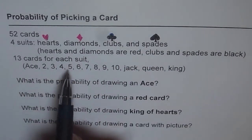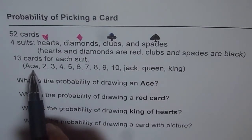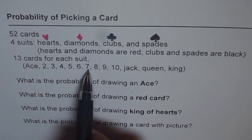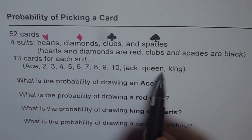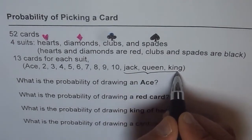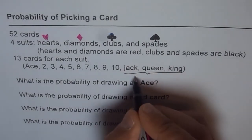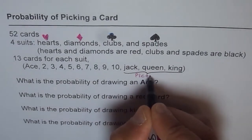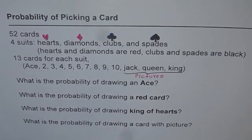Each suit of 13 cards is numbered: instead of one we use ace, then two through ten, and then jack, queen, and king. Jack, queen, and king are normally shown with pictures on the card.